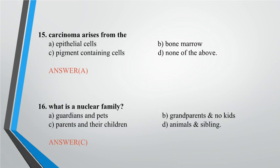Question 16: What is a nuclear family? A. Guardians and pets, B. Grandparents and no kids, C. Parents and their children, D. Animals and sibling. Answer: C.